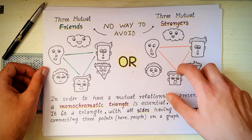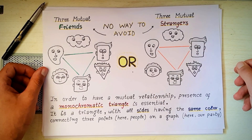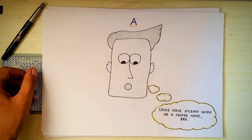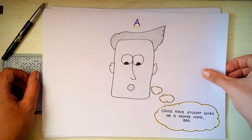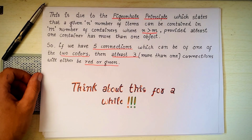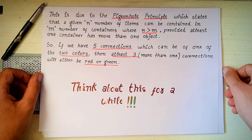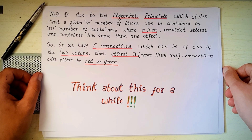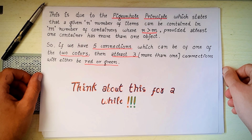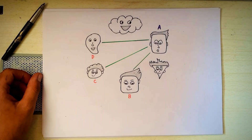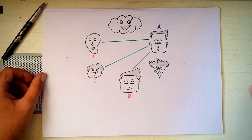To prove this, let's just focus on a guy named A. The pigeonhole principle says that he has to have at least 3 friends or 3 strangers. Whichever case we take, we will arrive at the same conclusion. Let's just take 3 friends of A.